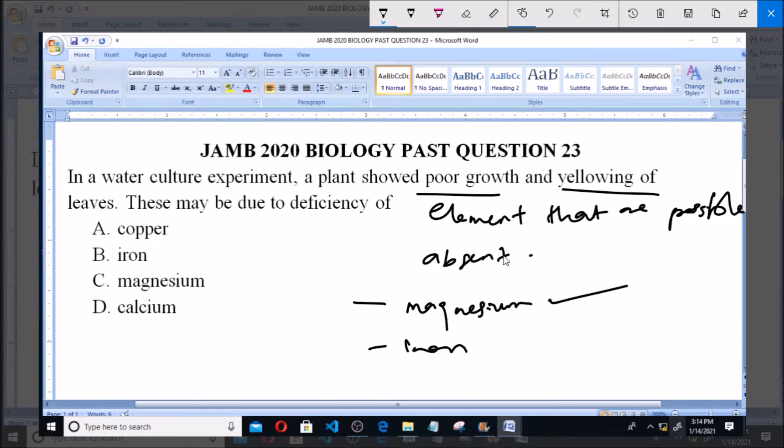because they require chlorophyll to produce food, and also yellowing of leaves instead of being green. So iron is also correct.